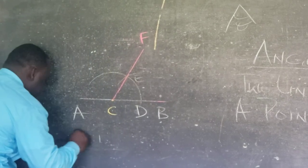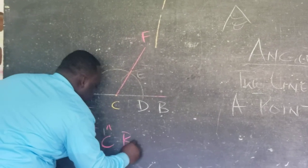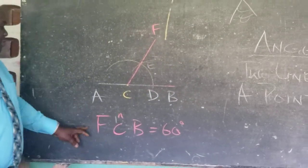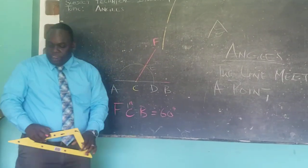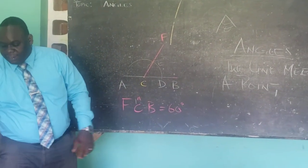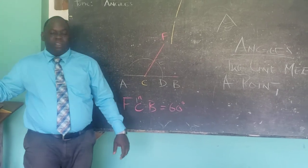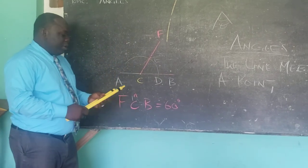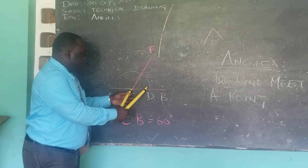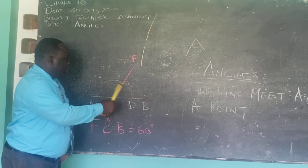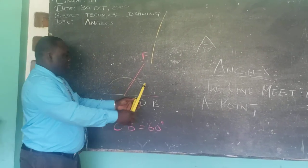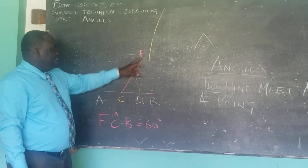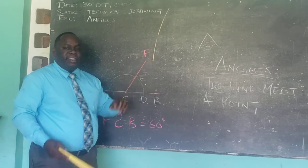So F, C, B is equal to 60 degrees. That is how we construct a 60 degree angle. To recap: we have our AB line. At C, we open our compass to a suitable radius and swing an arc. Without changing the radius, we go to D and cut that arc. So B, C, F — that is now going to be our 60 degrees.